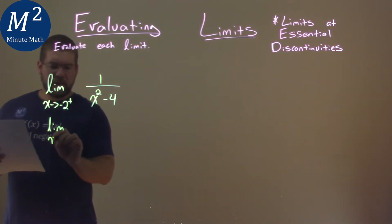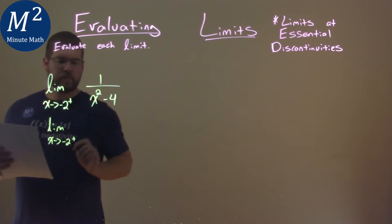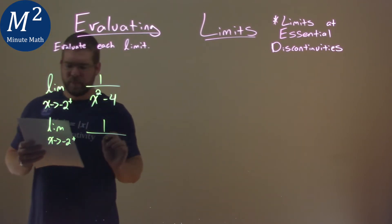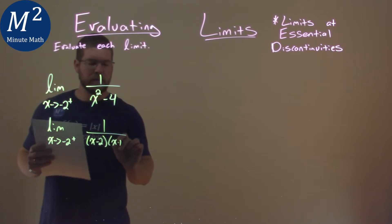So the limit here as x approaches negative 2 from the right of 1 over, and the denominator factors to be x minus 2 and x plus 2.